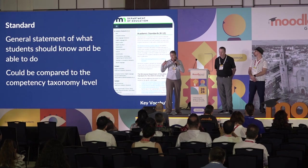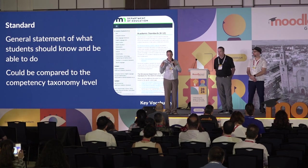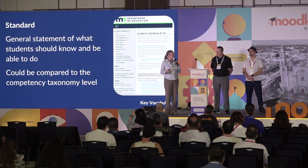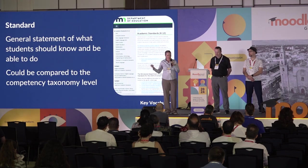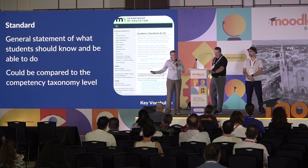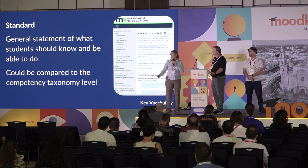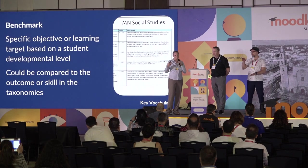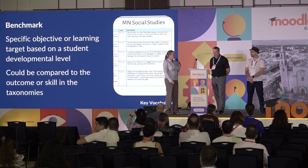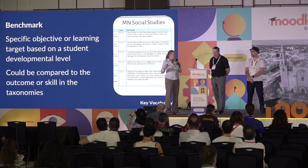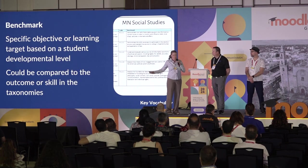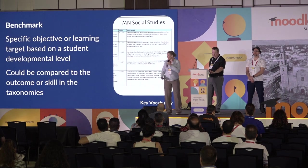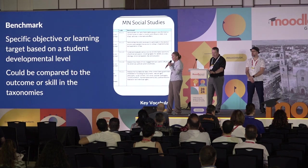We're going to talk about standards — that's what we use. It's kind of like a competency, but basically it's a general statement of what a student should know and be able to do, compared to that competency level. Underneath the standard we also have benchmarks. That's a different level of the framework — a specific objective or learning target, an outcome or skill within that competency framework.